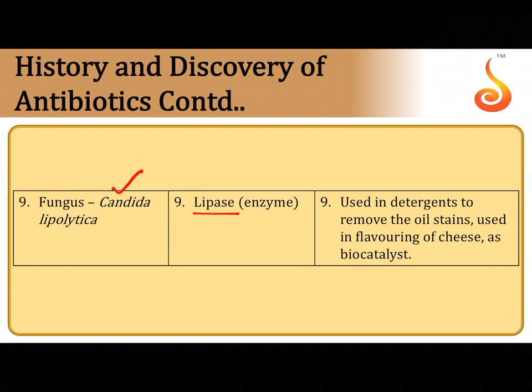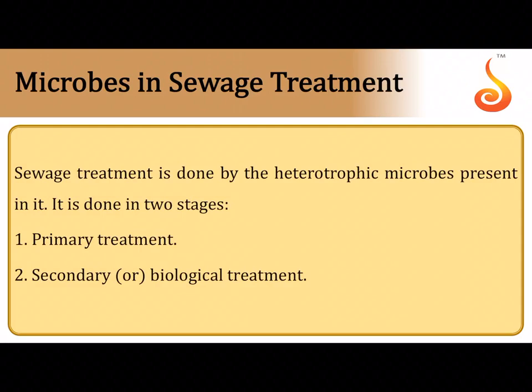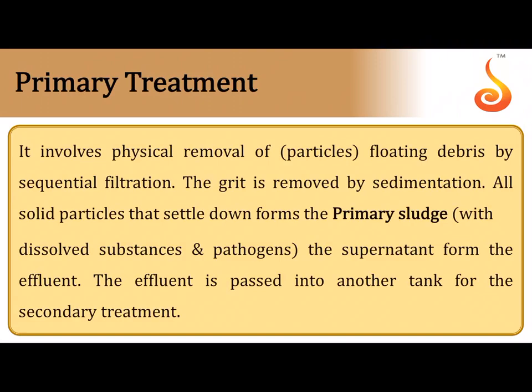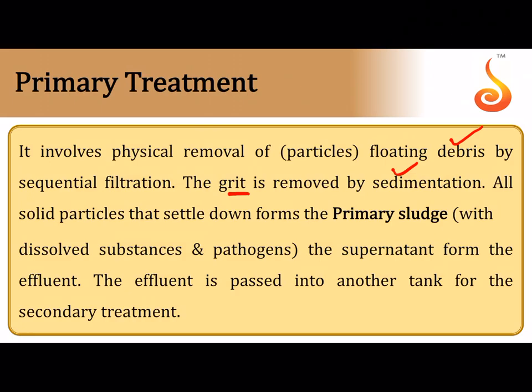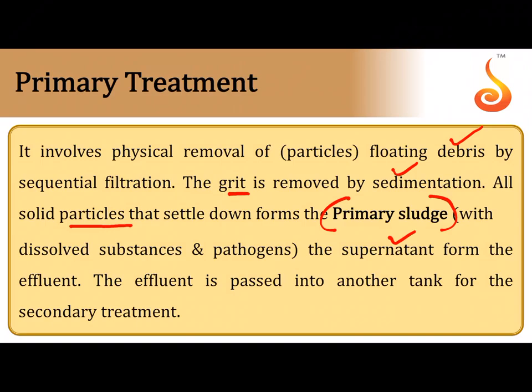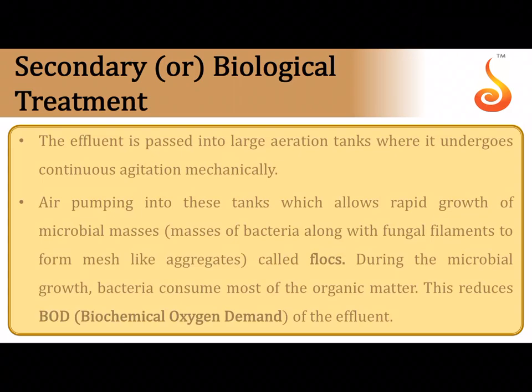Candida lipolytica can also be used in flavoring cheese and as a biocatalyst. Moving on to sewage treatment: in sewage treatment plants, two steps are carried out — primary treatment and secondary (biological) treatment. In primary treatment, suspended particles are removed: debris is removed by filtration and grit or soil particles by sedimentation. Settled particles are called primary sludge, and the clear supernatant is passed to the secondary treatment tank.